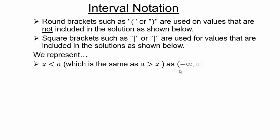If x is smaller than a, where a is a real number, that means we are looking at all real numbers smaller than a. We can represent that as left parenthesis, negative infinity, comma, a, right parenthesis. A is not included. Infinity is not a number — it's a symbol representing you're going forever below a, which is why it's negative infinity. Pictorially, you have a number line where a is not included and everything to the left of a is included.